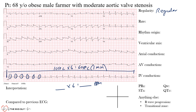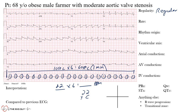Counting across the strip gives us 22 QRS complexes. Multiply 22 times 6 and you get 132 beats per minute as our estimated rate. So counting the complexes and multiplying by 6 — because the strip is 10 seconds — gives us an estimate of the rate in beats per minute.